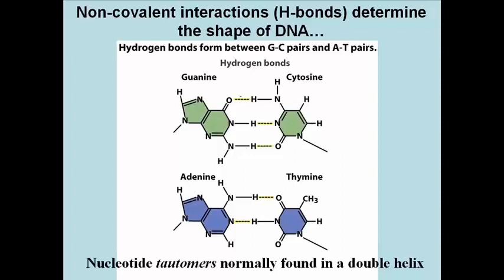But the potential of the bases to exist in different shapes, or tautomers, with different H bonding potential, made building the model of DNA, or the DNA double helix, interesting to say the least.